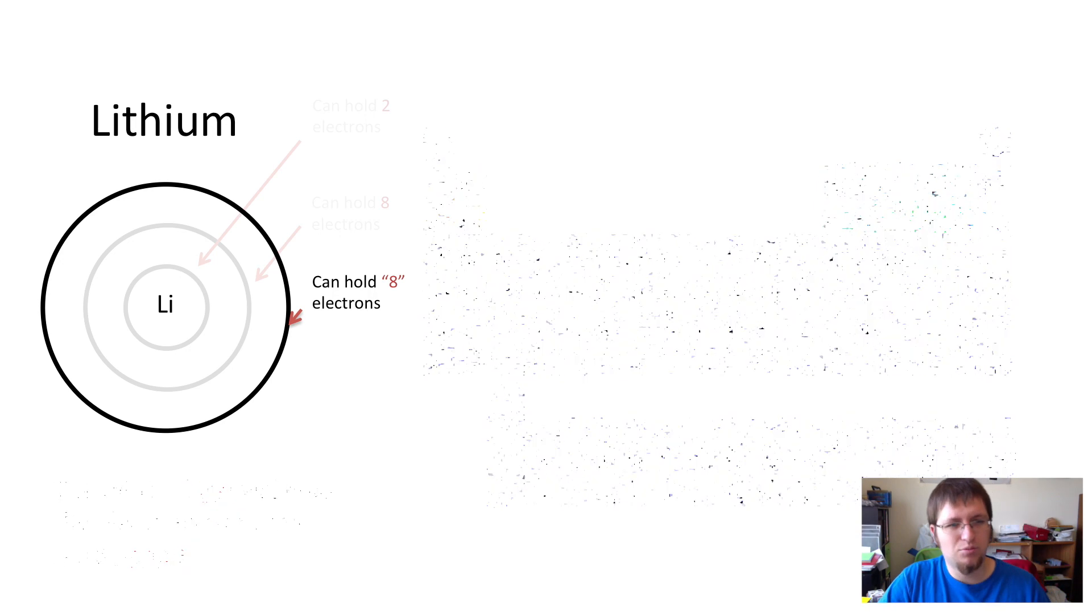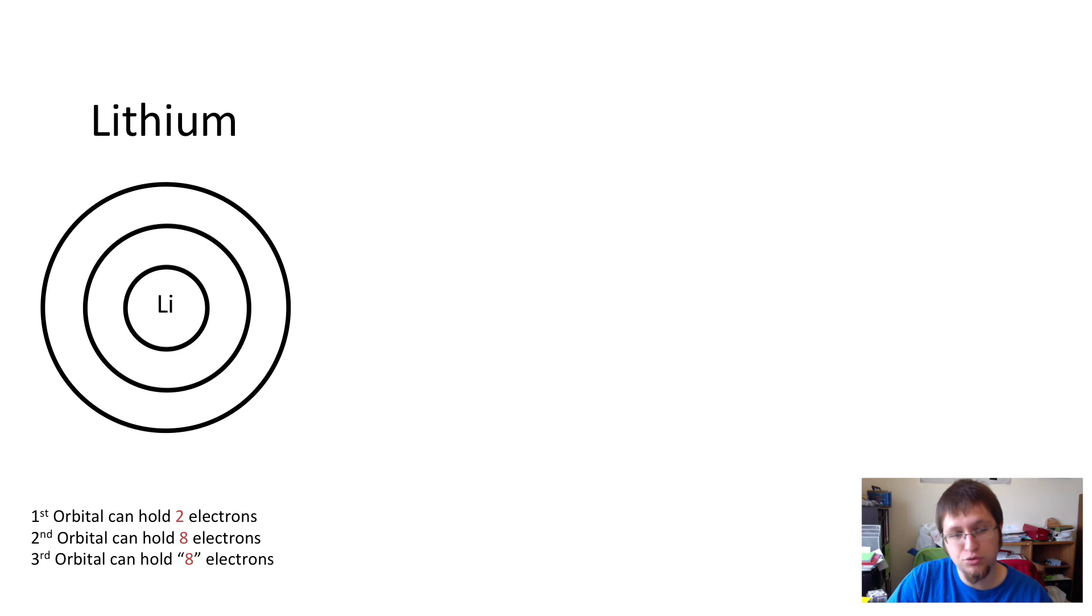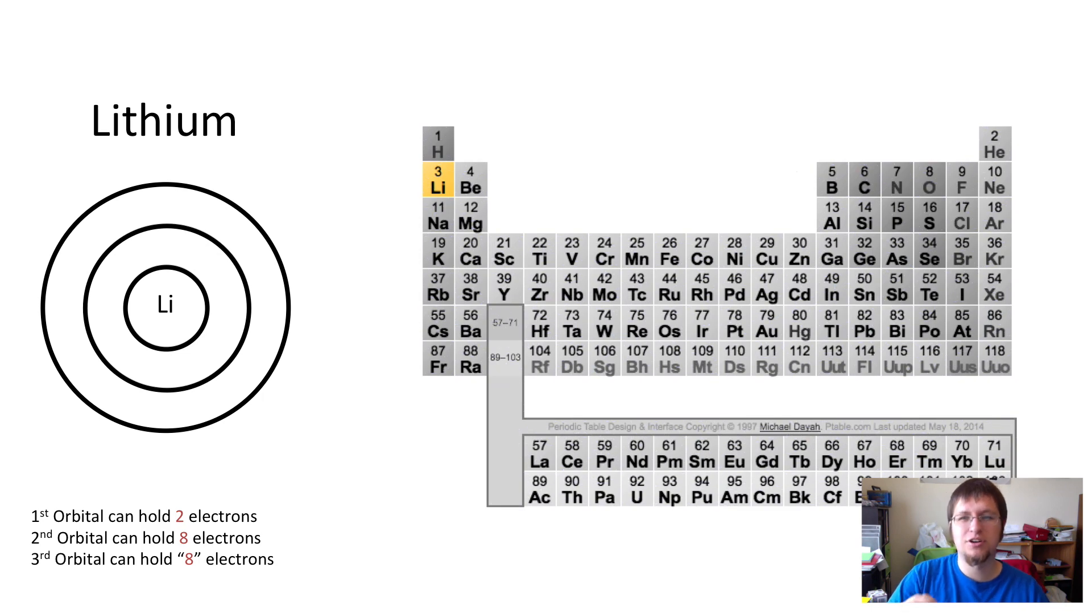Now, once again, we're going to take all that information. First shell can hold two, second shell eight, third shell eight. And we're going to look, once again, we're going to try to draw the diagram for lithium. Lithium has three electrons, so we need to be able to fit three in. You'll notice that lithium is in the second period, the second row. So we don't even need that third orbital. We're only going to need the two.